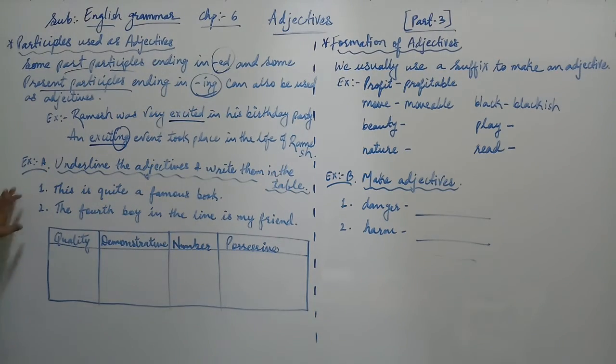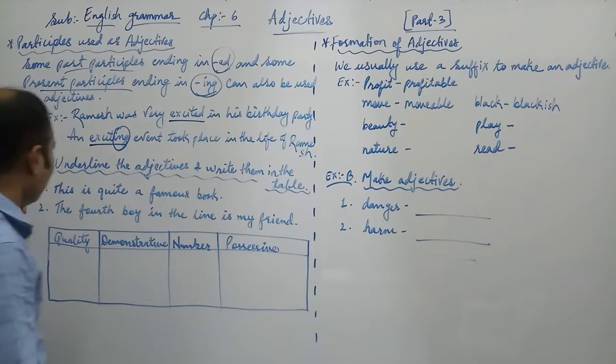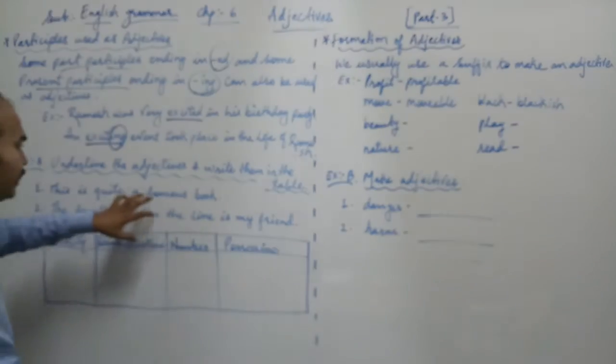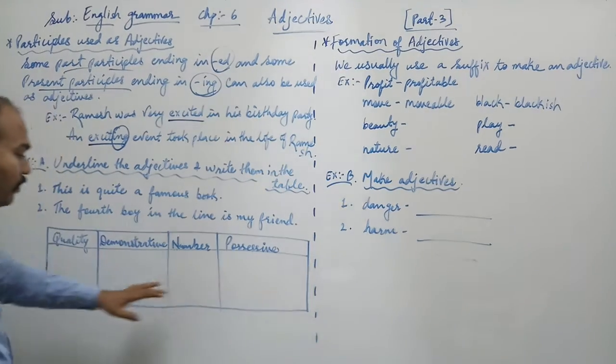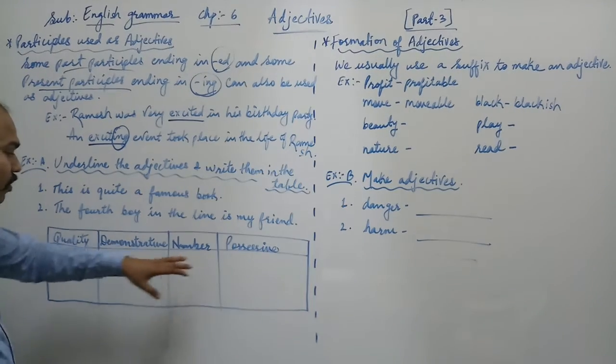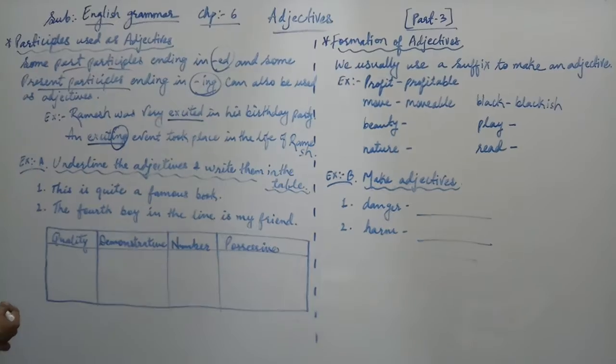That is exercise number A, which is underline the adjectives and write them in the table. Two questions are selected over here. We have to underline the adjectives and in the same way we have to write them in the table. We have to bifurcate them, to segment them according to the kind of the adjective.